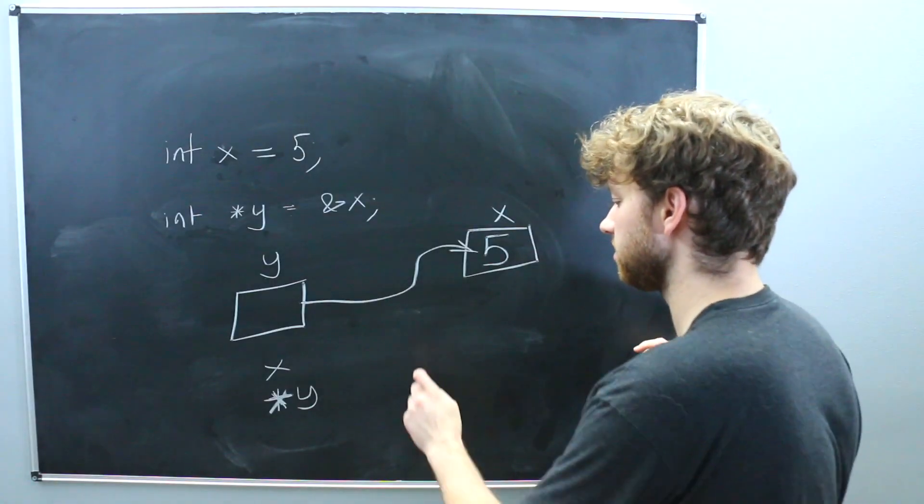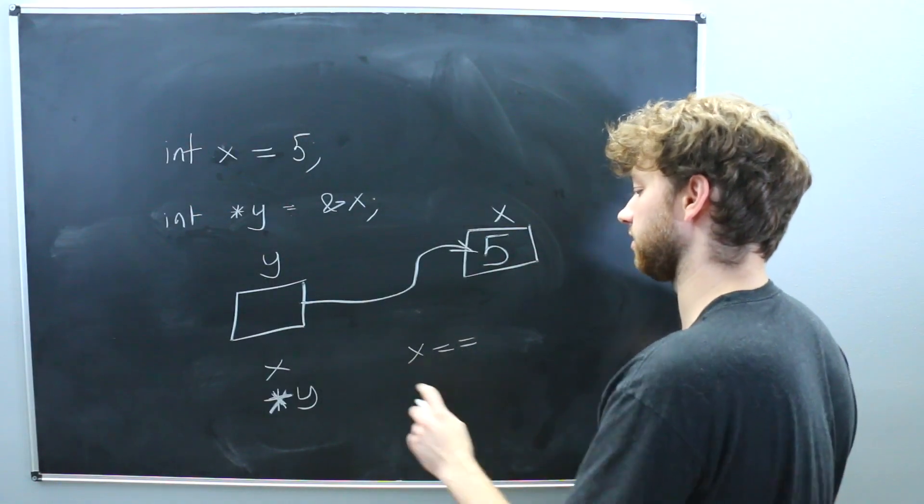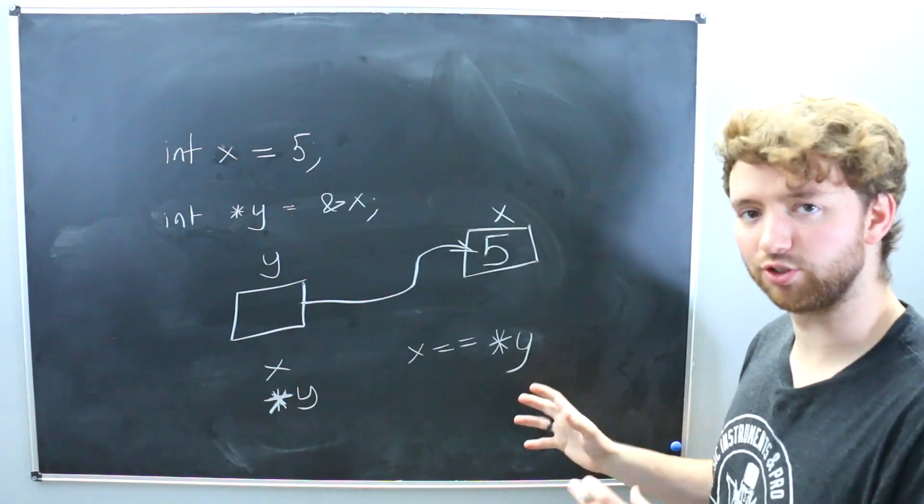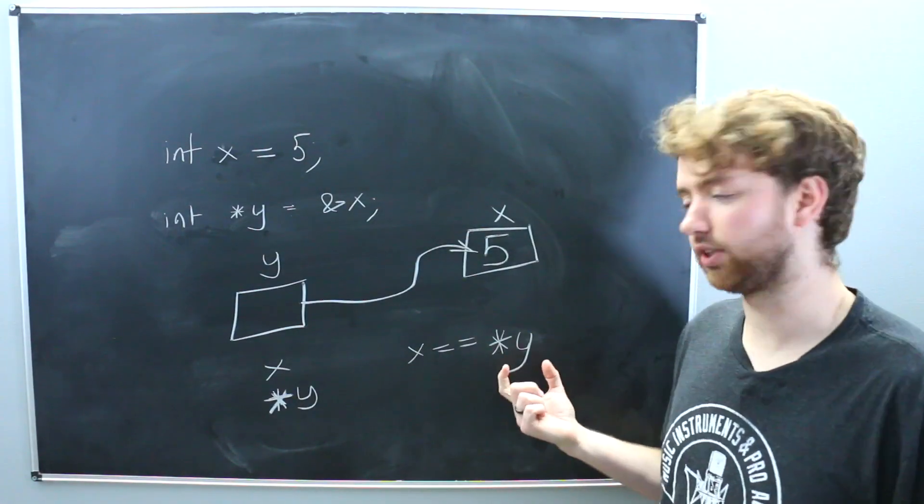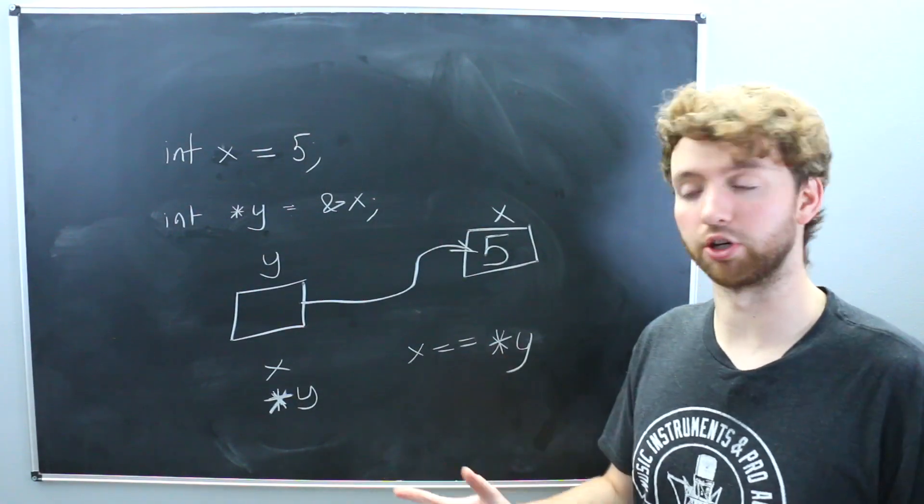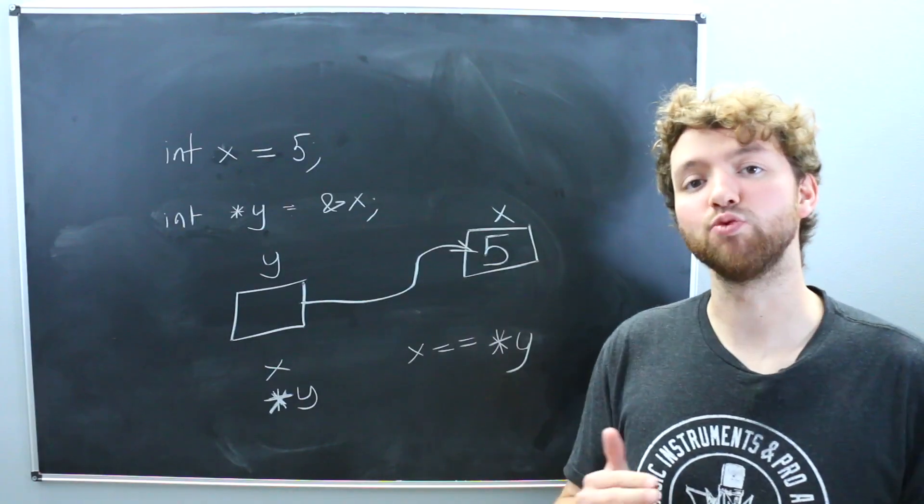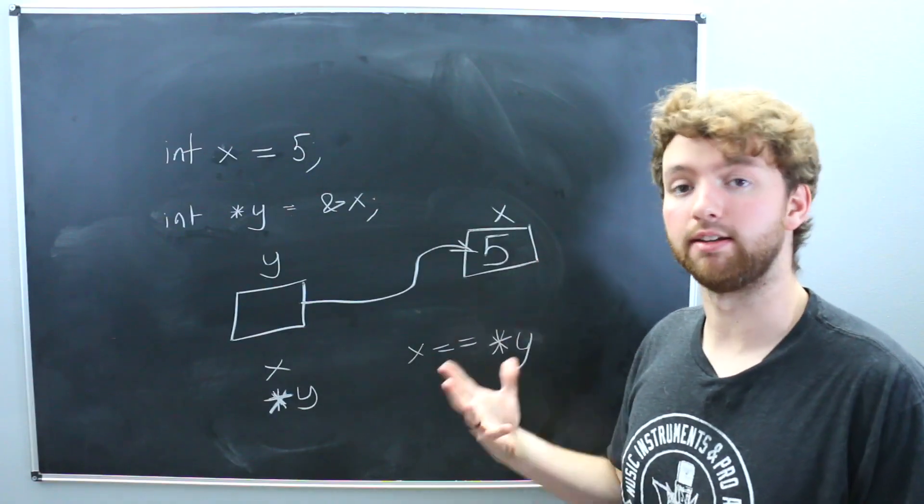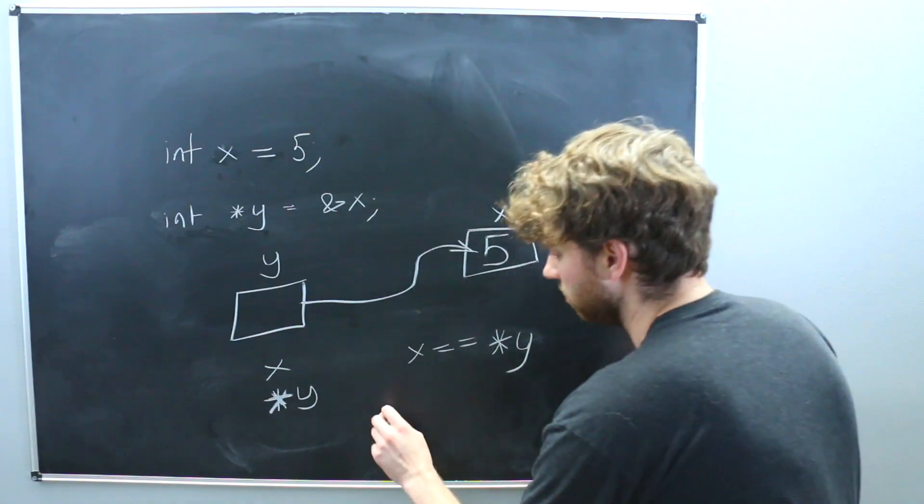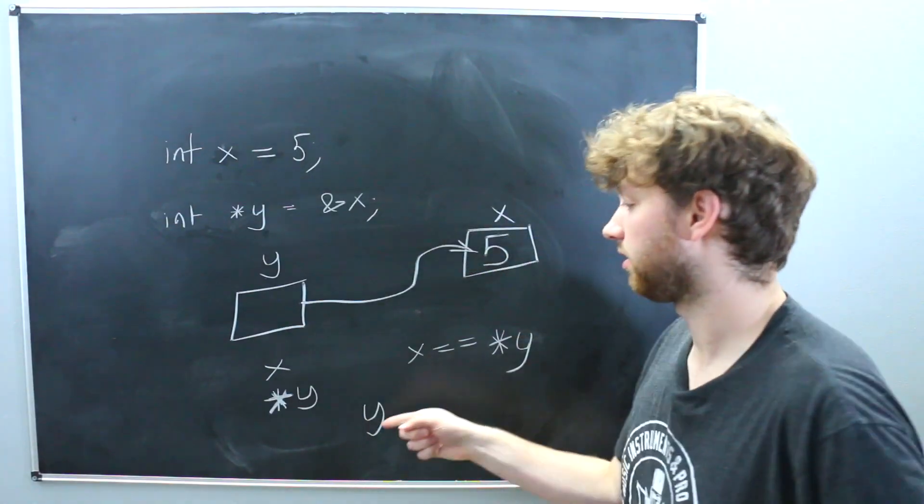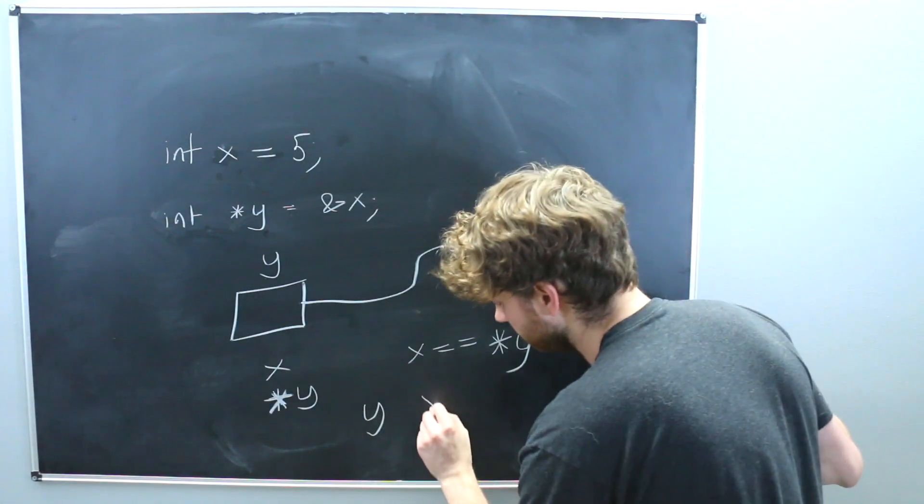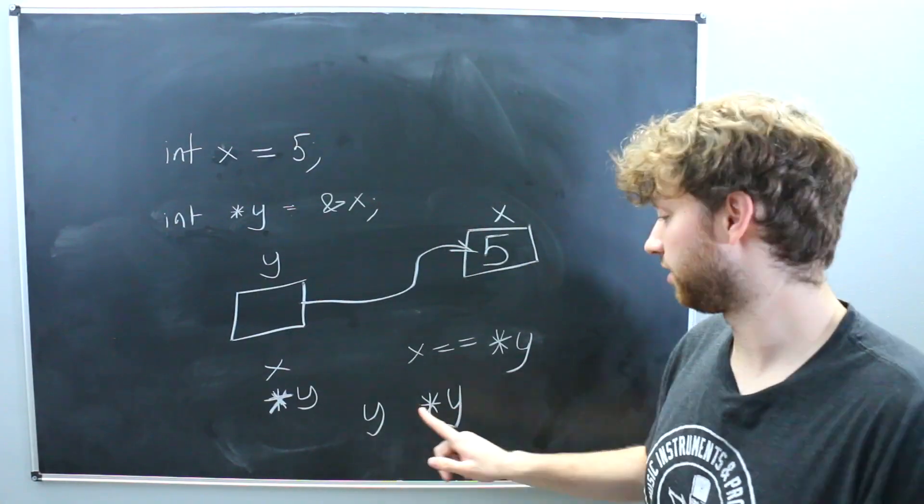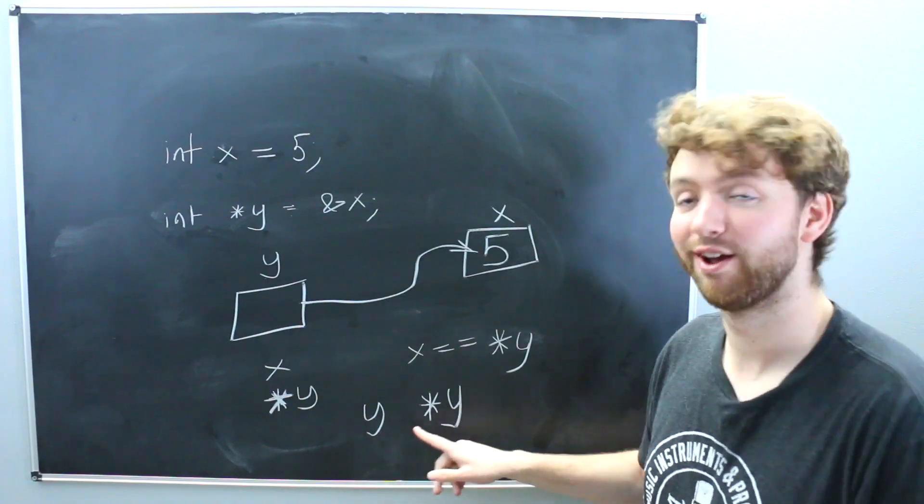So asterisk y, that is also going to give you the value five. So if you were to compare these, x being equal to asterisk of y, this should evaluate to true. Now I've been saying asterisk y, but that's not the official technical term of this. This is called the dereferencing operator. So we are dereferencing y to get the value that it points at. Now we're working with an integer. So just to repeat that, y is a pointer. Dereferencing y gives us an integer. Integer pointer, integer.